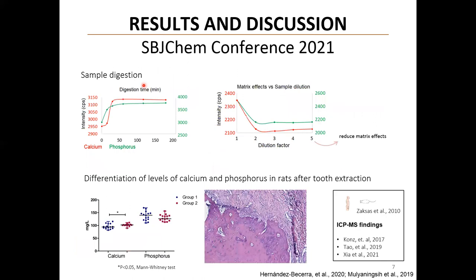An effective sample digestion was obtained after 60 minutes, which can be observed here in red for calcium and in green for phosphorus. The optimal sample-to-acid ratio was obtained from the dilution factor 3.